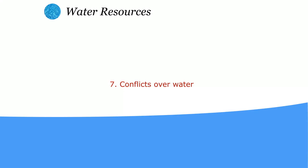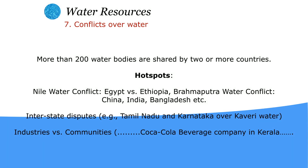Conflict over water can be studied through three cases. First is the Nile water conflict between Egypt and other countries fighting over the water of the Nile. Second is the interstate dispute where Tamil Nadu and Karnataka are fighting over Cauvery water. Third is the industry versus community conflict, like the Coca-Cola beverages company in Kerala, where the community is fighting against the company over groundwater use.